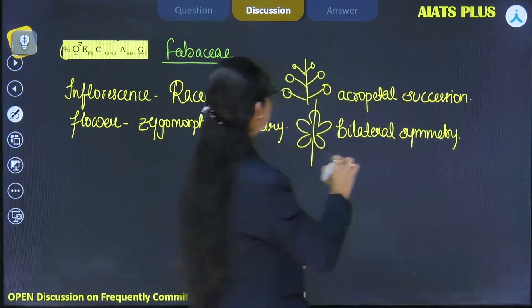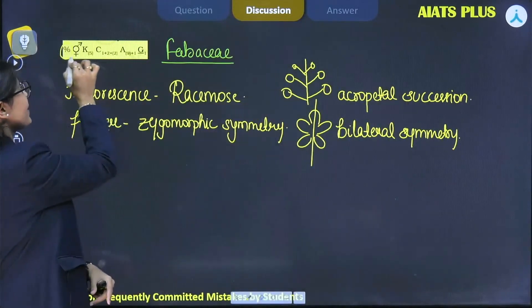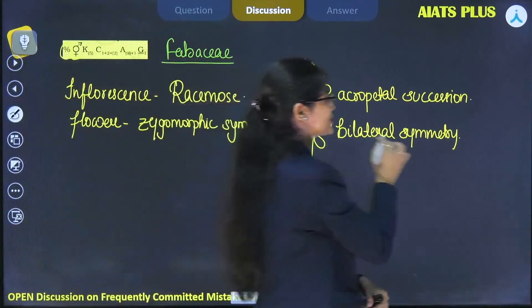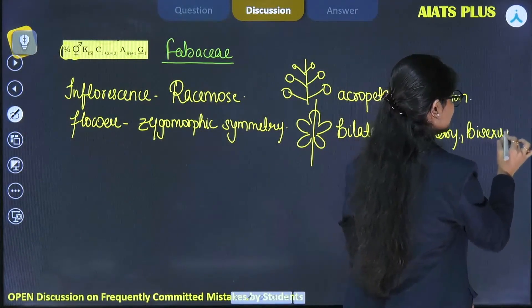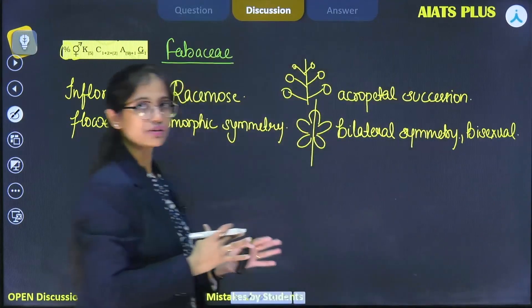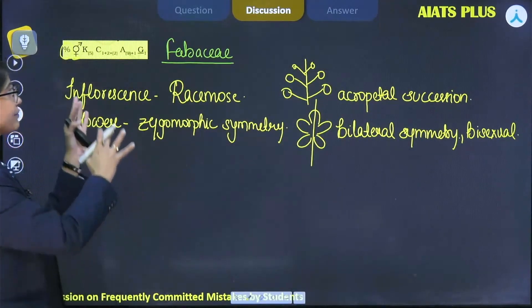Here in the diagram we can see that the flower is bisexual, meaning both male and female sex organs are present. This is how we learn the features of the family members by remembering the floral formula.